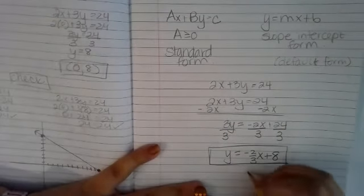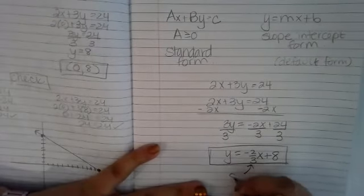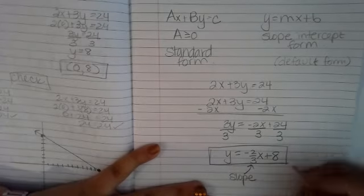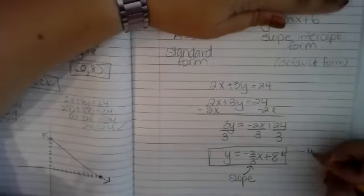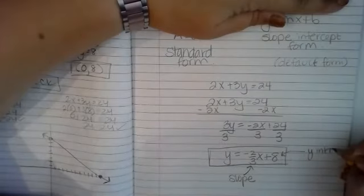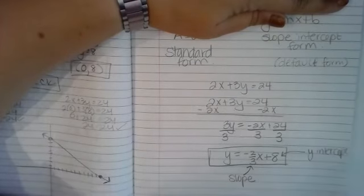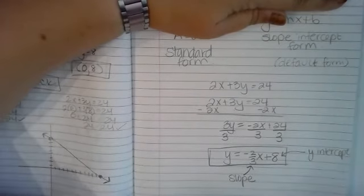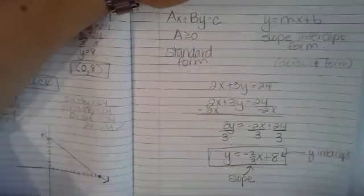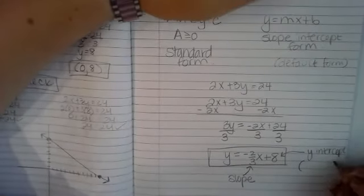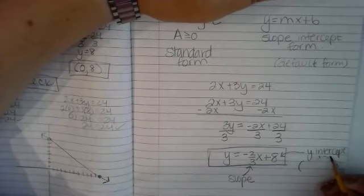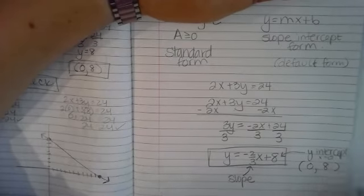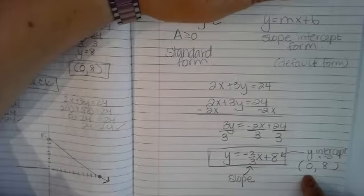24 divided by 3 makes 8, so now I have slope intercept form: y equals negative two-thirds x plus 8. My negative two-thirds is my slope, and 8 is my y-intercept. Remember, intercepts are written as ordered pairs, so my y-intercept means x equals zero: the ordered pair is (0, 8).